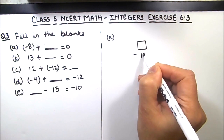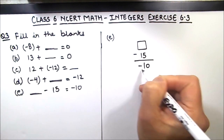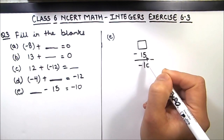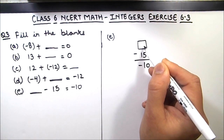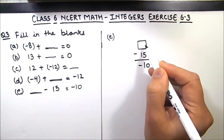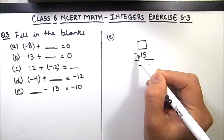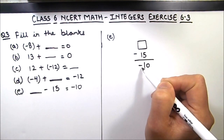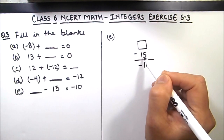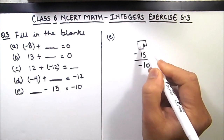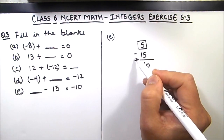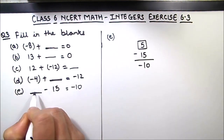In part E we have to subtract 15 from some number to get the result as minus 10. A negative number won't work because negative and negative would make the number bigger than 15. So we take a positive number. A positive number bigger than 15 would give a positive result, so we need a positive number less than 15. 15 minus what gives 10? The number is 5. So 15 minus 5 is 10, and the sign is of the bigger number which is 15, so the answer is negative 10. The fifth blank is 5.